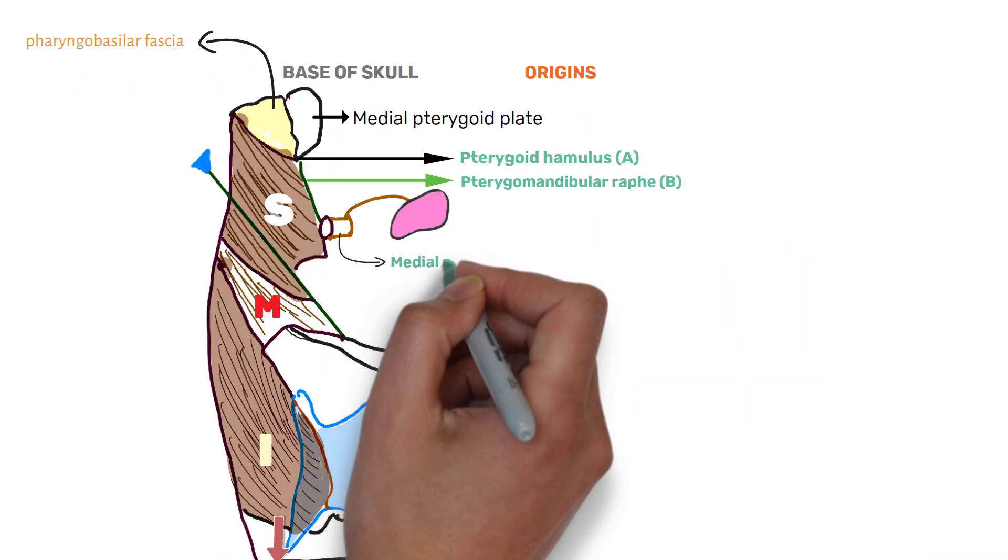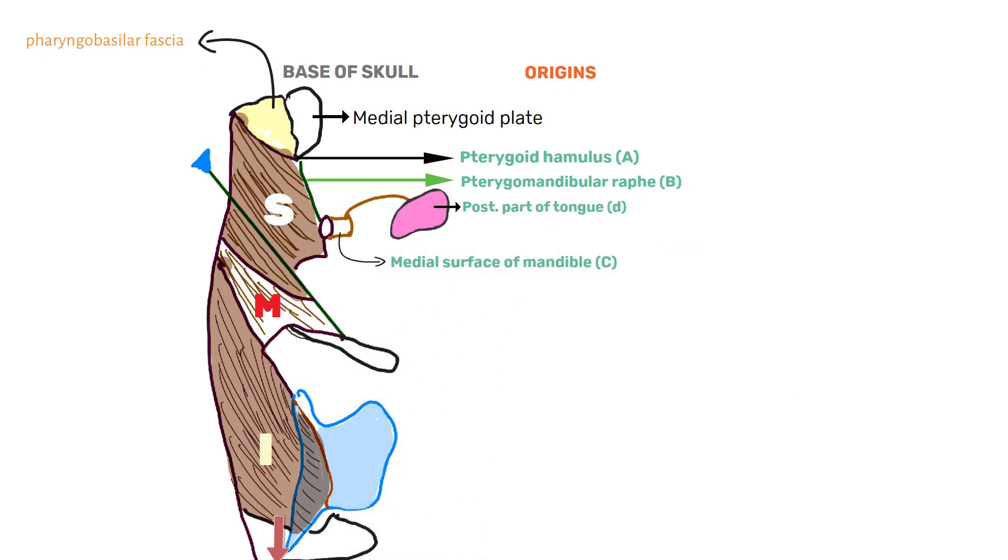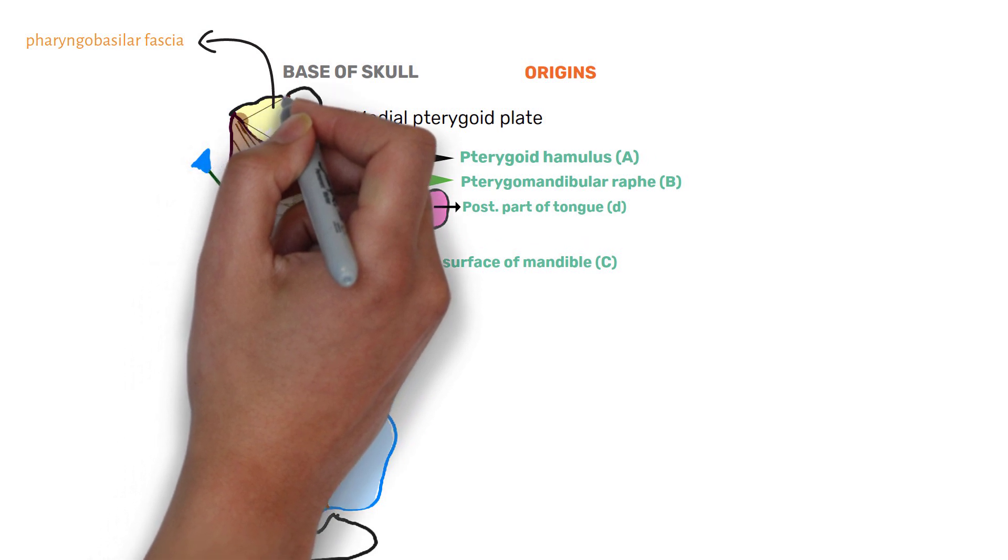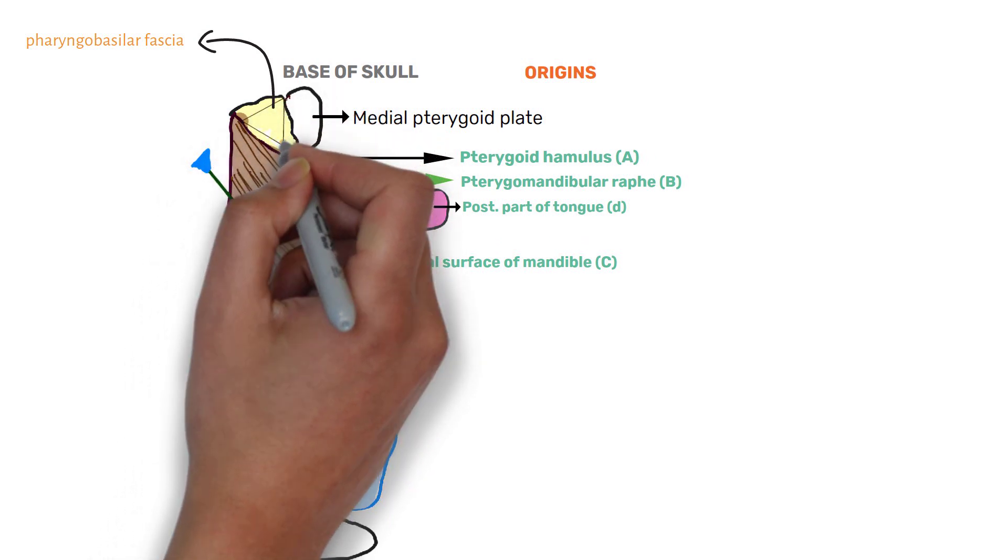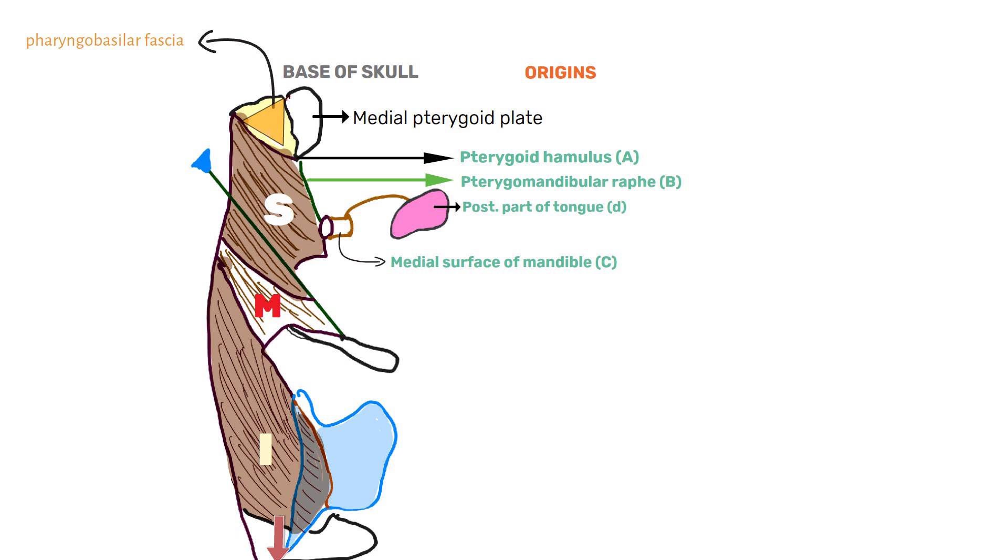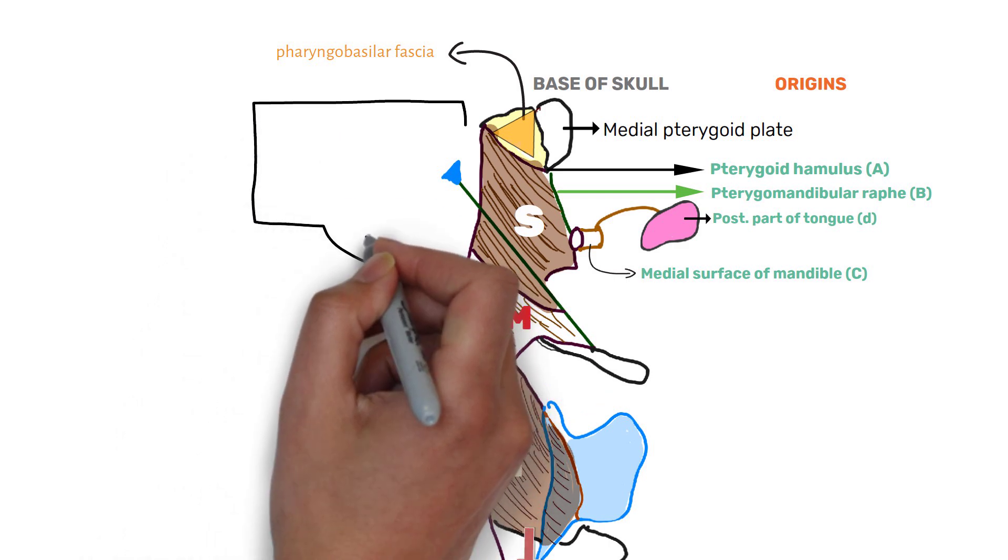c) medial surface of mandible; and d) posterior part of the tongue. The fibers of superior constrictor reach the base of skull posteriorly. And a gap can be observed between base of skull and the upper edge of superior constrictor muscle if seen from the side view. This gap is filled by pharyngobasillar fascia.